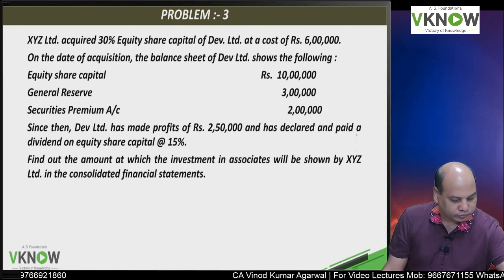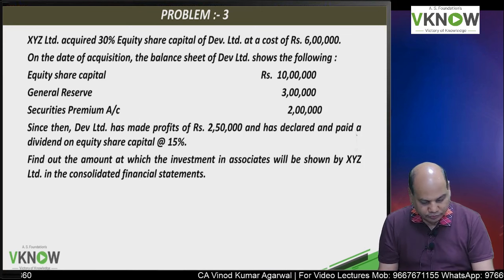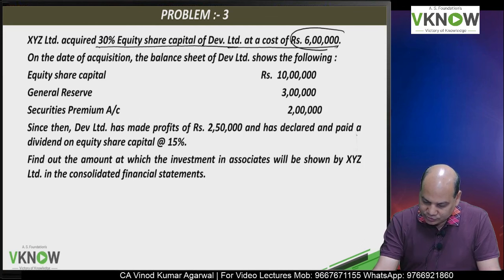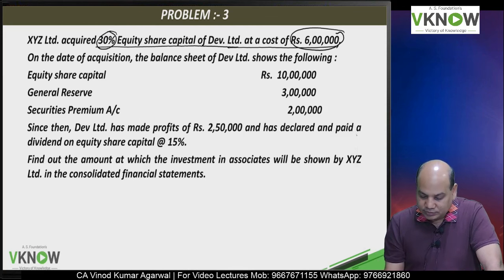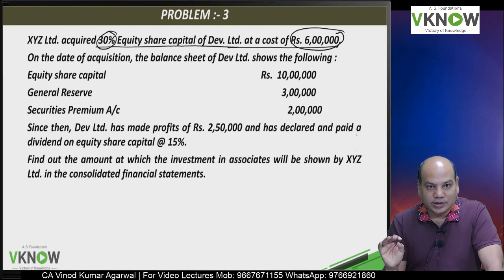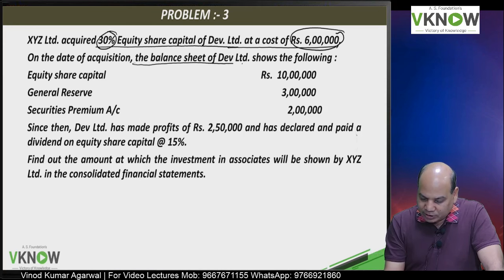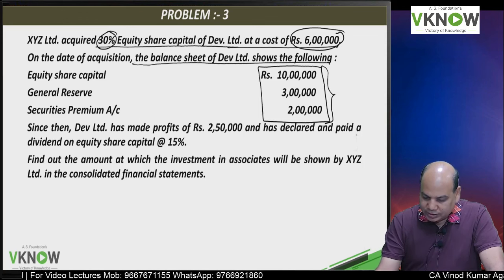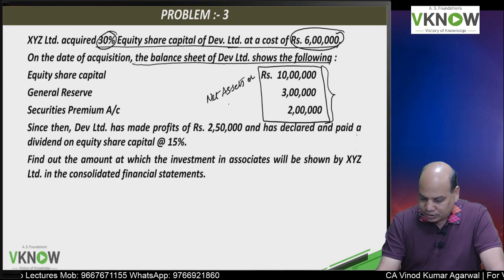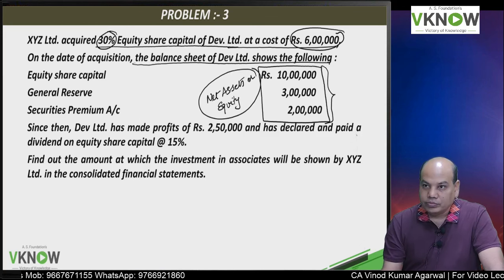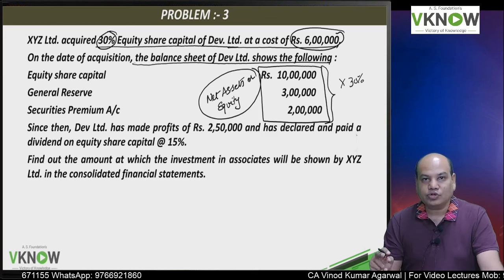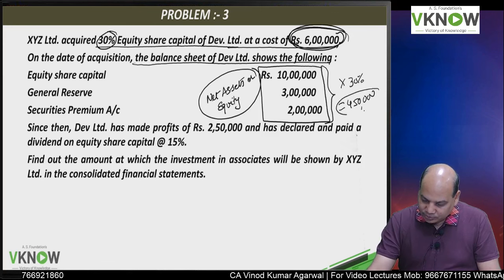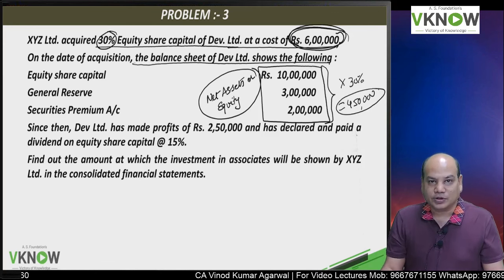We will go to question number 3. XYZ Limited acquired 30 percent equity share capital of DEV Limited at a cost of 6 lakh. The cost is 6 lakh; share in net asset is 30 percent. On the date of acquisition, the balance sheet of DEV Limited shows the following. If you multiply by 30 percent, that will give you share in net assets — 15 lakh into 30 percent is 4 lakh 50,000. 6 lakh minus 4 lakh 50,000 — 1 lakh 50,000 will be goodwill.